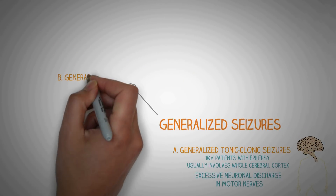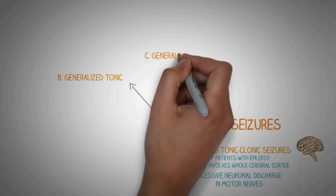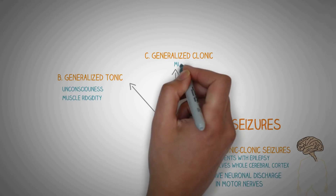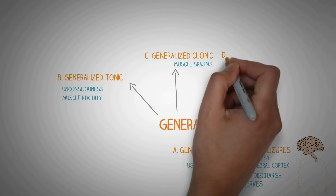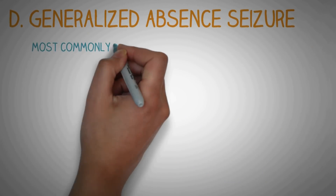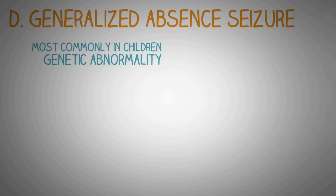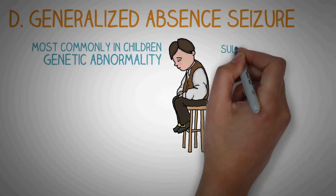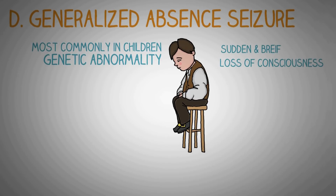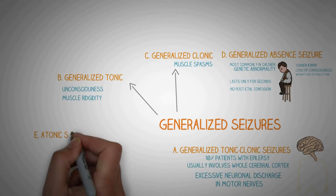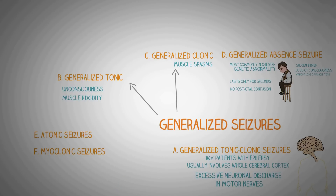There are other types of generalized seizures as well, like the generalized tonic and the generalized clonic seizures, characterized by symptoms of only the tonic or clonic phase respectively without transforming into another state. Another type is the generalized absence seizure, which is the most common type of seizure in children and is considered to be due to a genetic abnormality. Generalized absence seizures are characterized by sudden and brief loss of consciousness without loss of muscle tone. These seizures usually last only seconds and there is usually no post-ictal confusion. Other types include atonic seizures and myoclonic seizures.